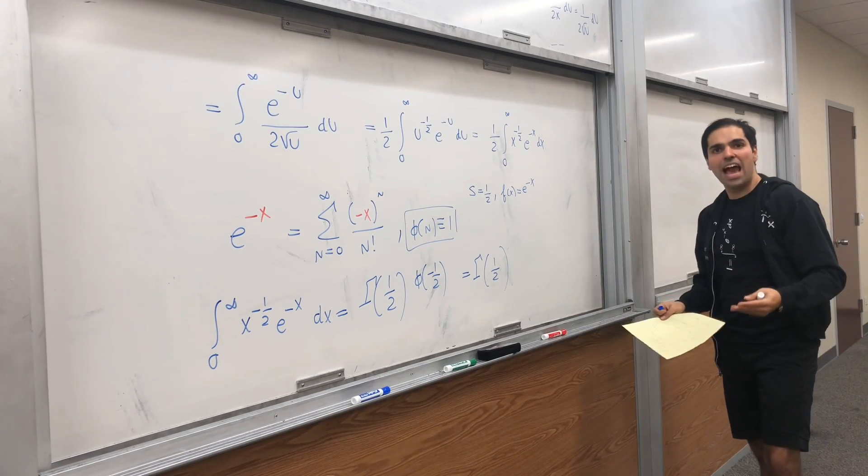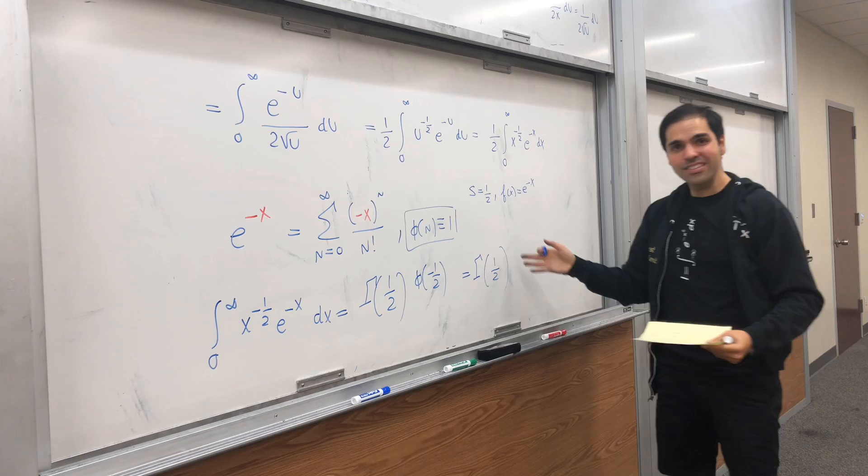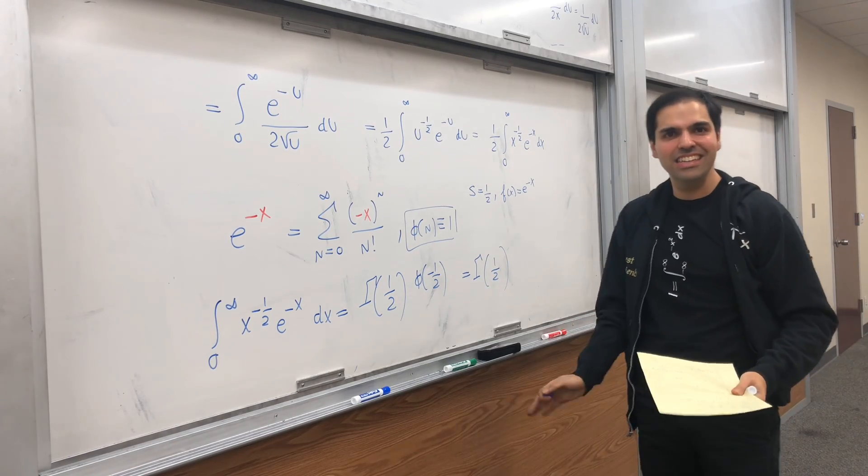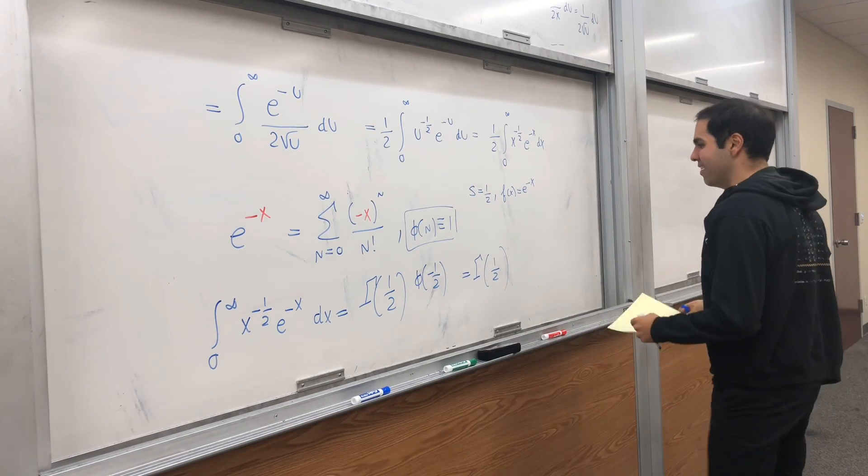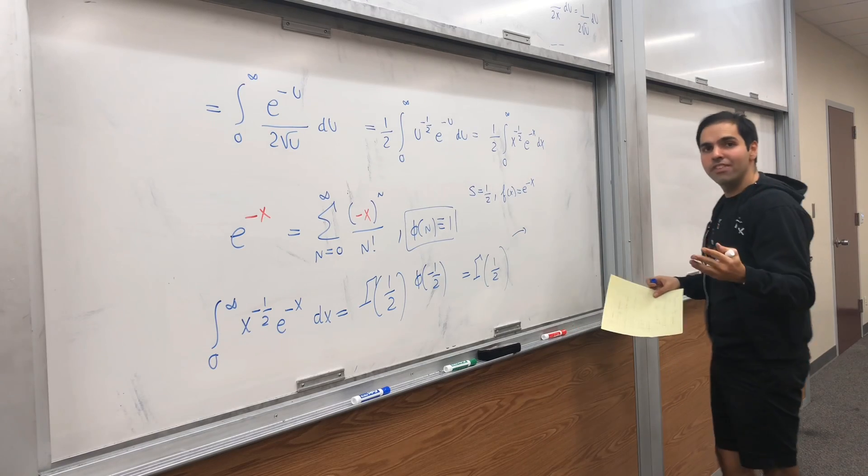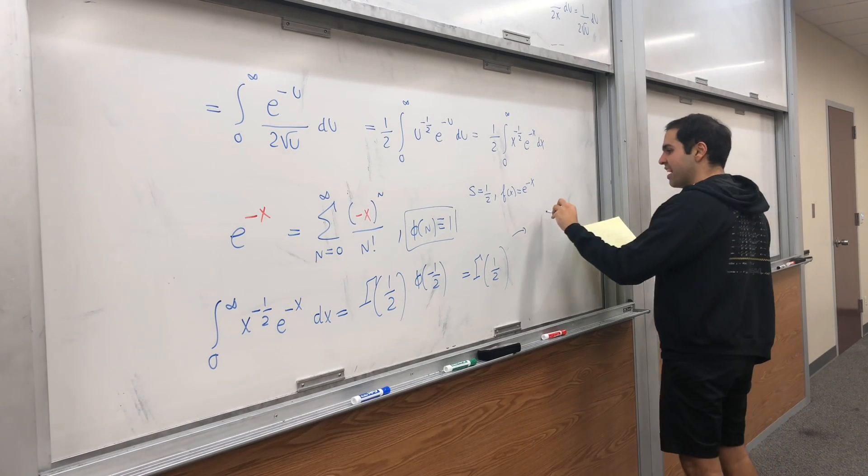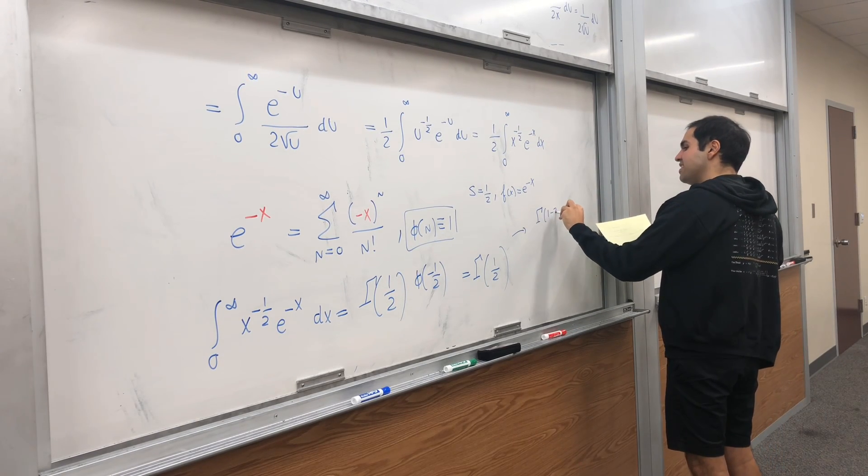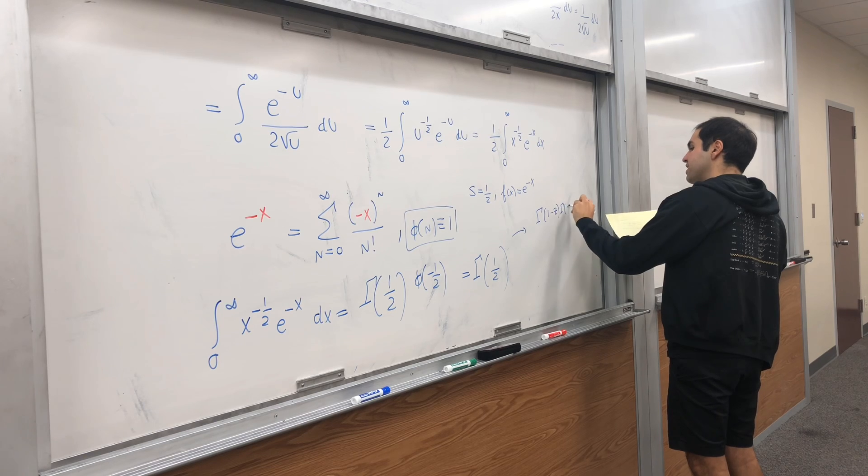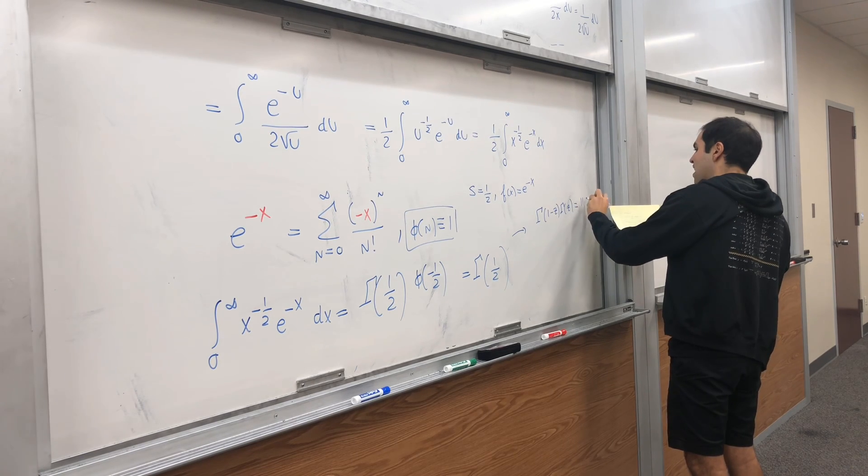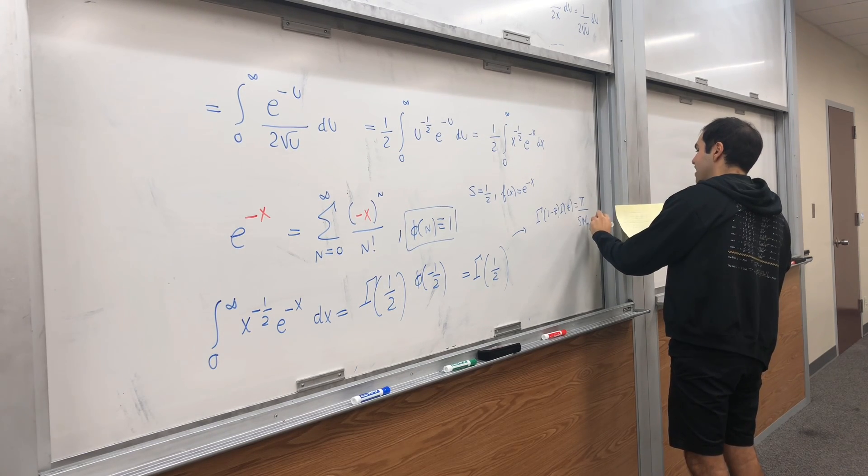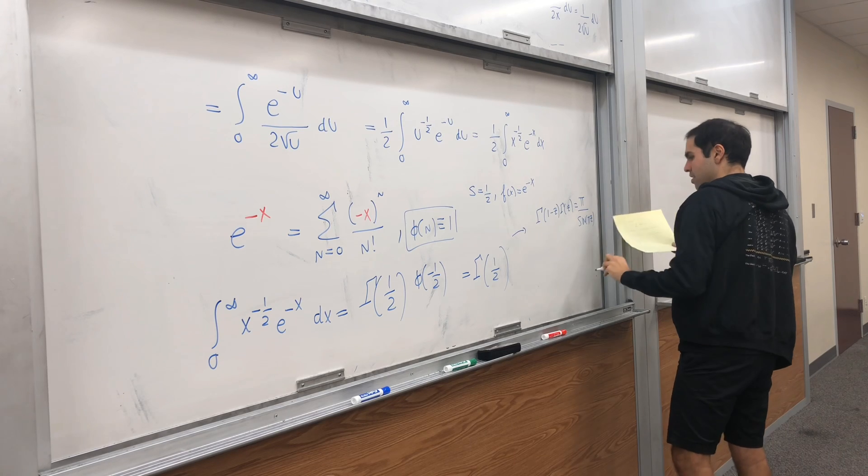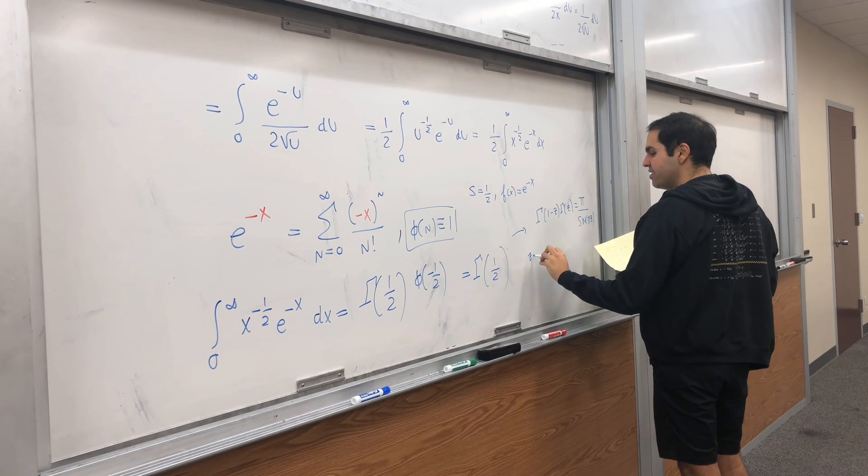Lastly, what is gamma of one half? Turns out there's this nice identity called Euler's formula, which I have done a video on, which says that gamma of 1 minus z times gamma of z equals pi over sine of pi z. In particular, let z be one half.